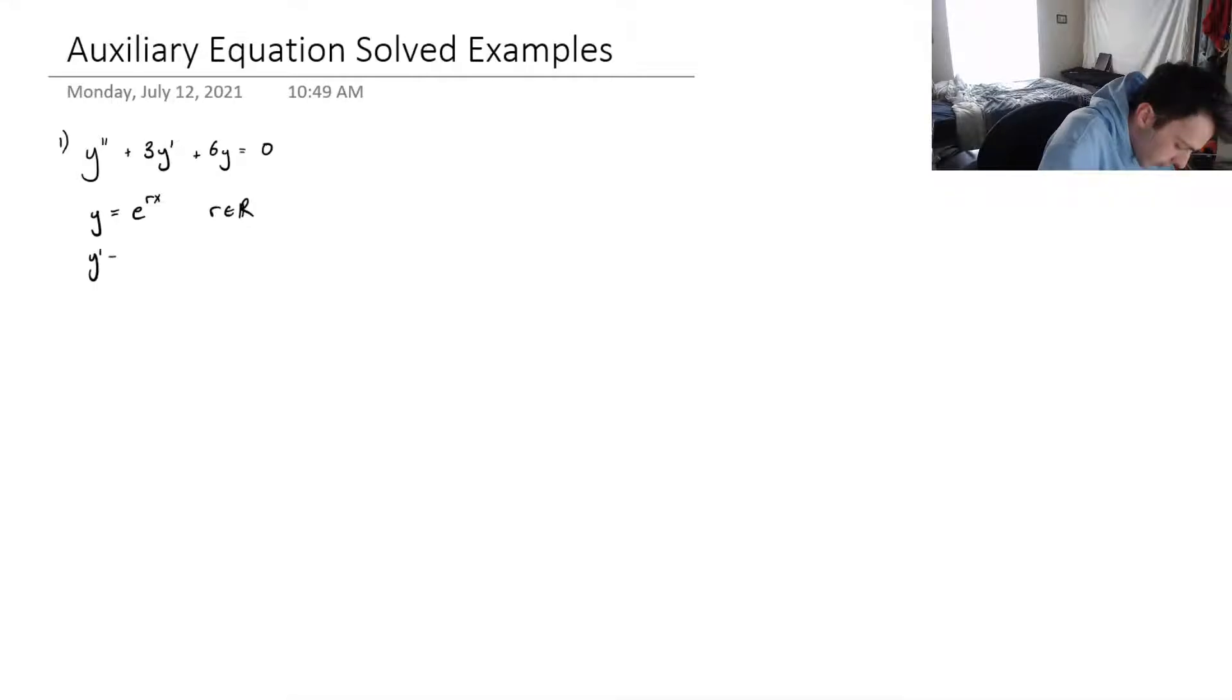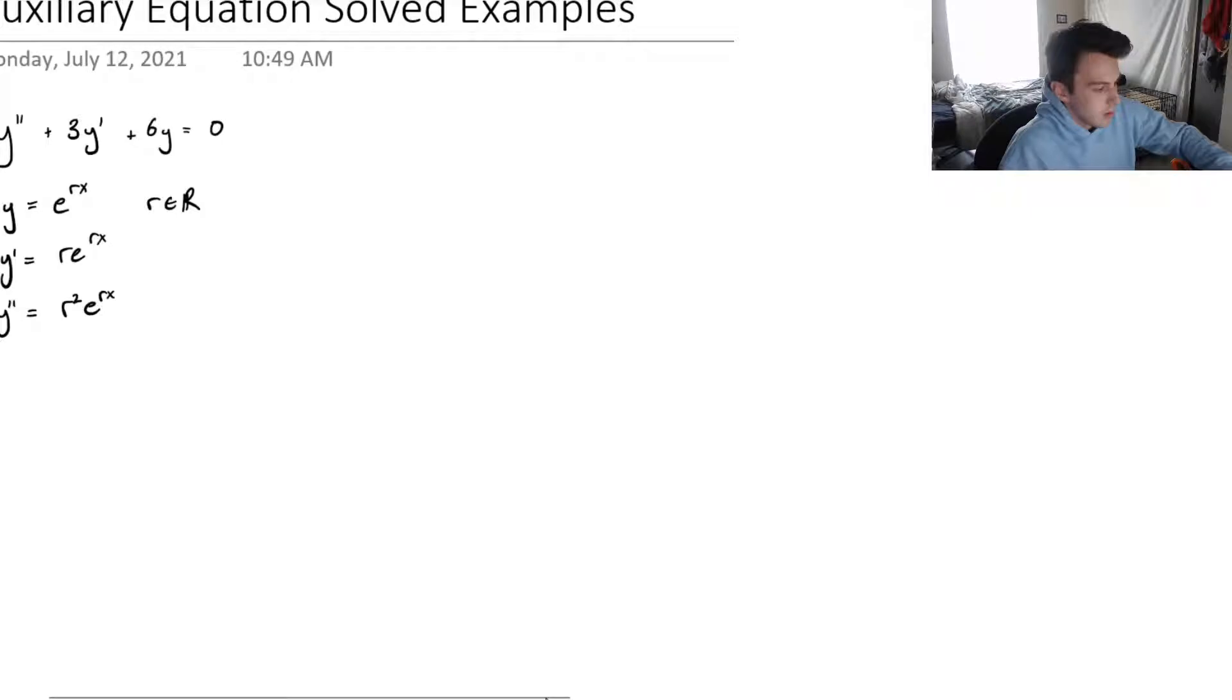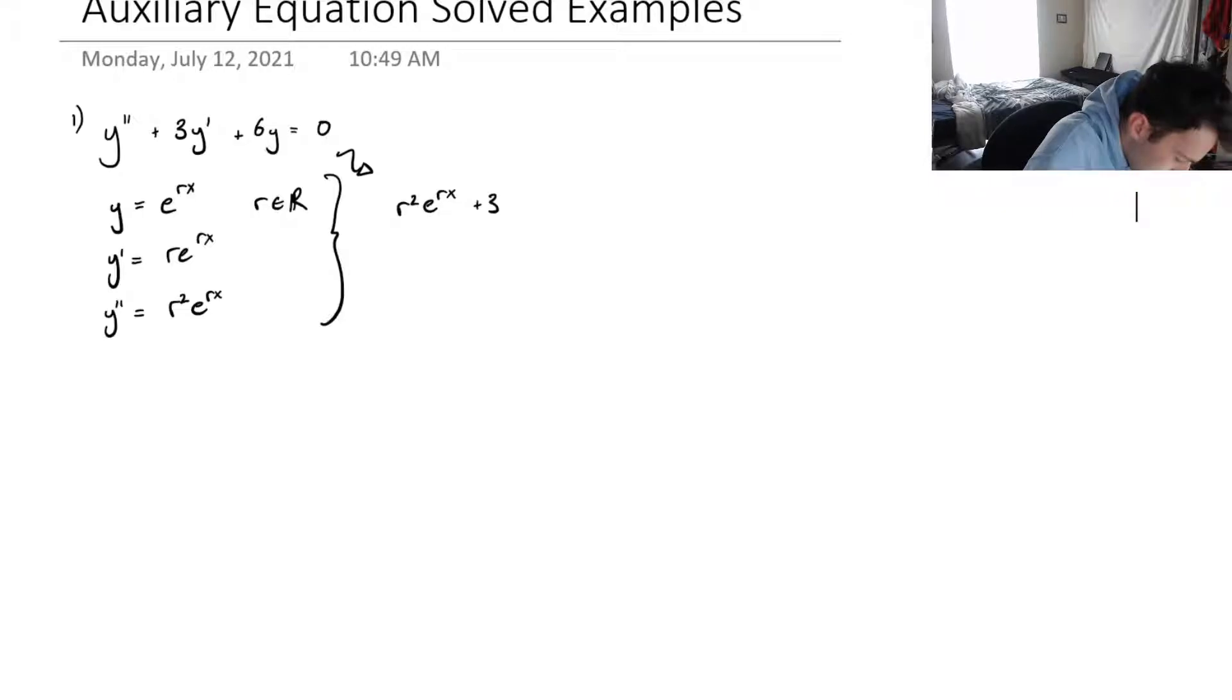So first derivative of this is r times e to the rx. Second derivative of y is r squared times e to the rx. And then we're going to plug this back in, let me zoom in a little bit here for you.